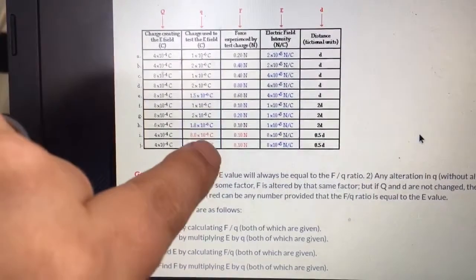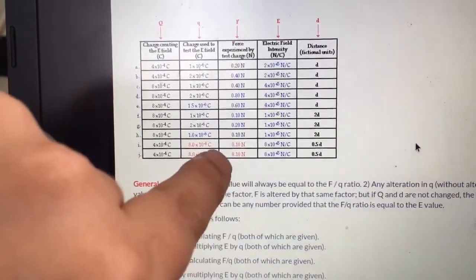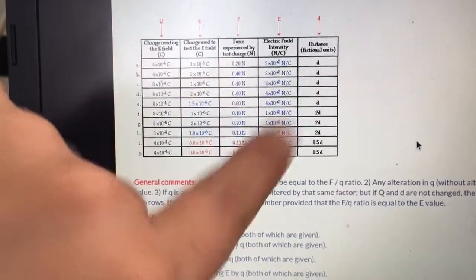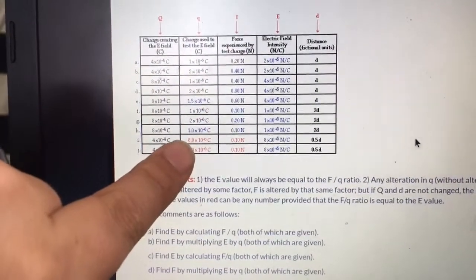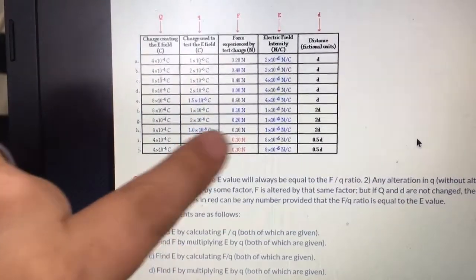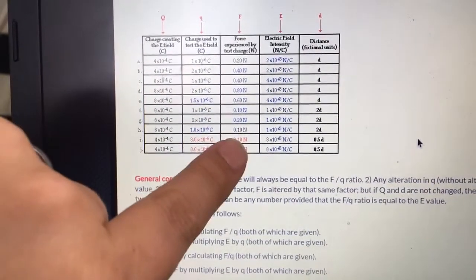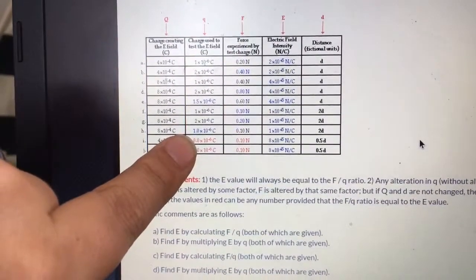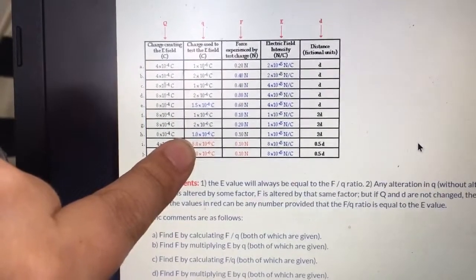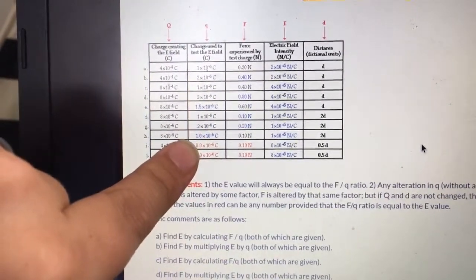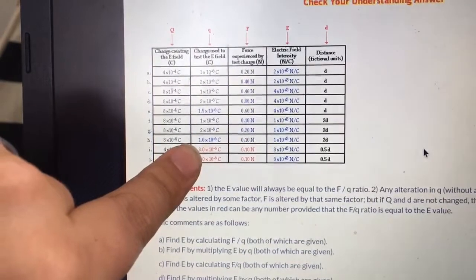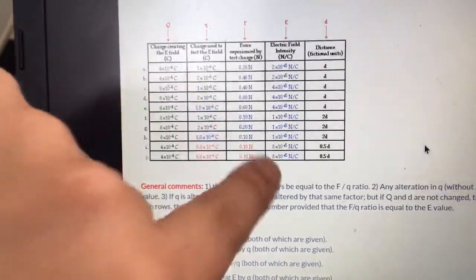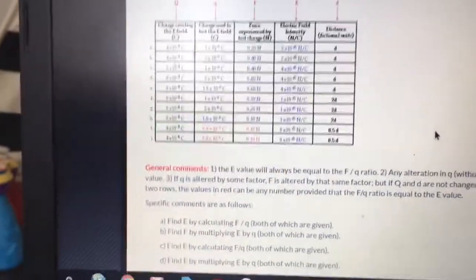I think I said that right—hopefully you get the idea. Any two numbers that go in here that make the ratio work would work just fine. Oh no, I did say that wrong. So if I made this 0.2, this would also have to be 2 times bigger, because 0.2 is twice as big as 0.10. So this would have been 16 times 10 to the minus 6, or properly written, 1.6 times 10 to the minus 5. And that could be 0.2, and you still get that same answer. That's the general idea.